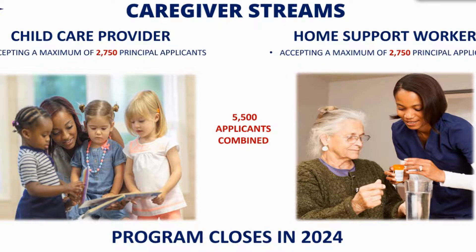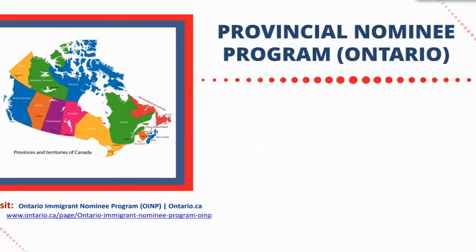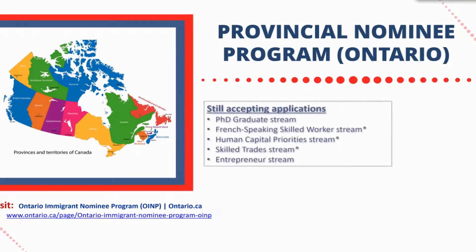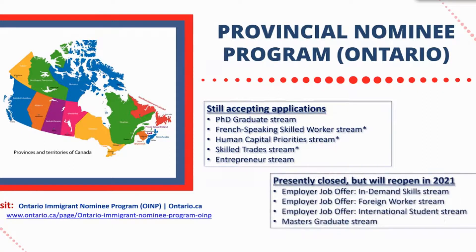The fourth key area is the Provincial Nominee Program. Canada has immigration options on federal and provincial levels, allowing provinces to determine and meet their specific needs, such as a shortage in the labor market. Although each province and territory is different, there are similarities in categories — such as high-skill positions, job offer-oriented streams, health care positions, international student categories, and business streams — which recur across provinces.